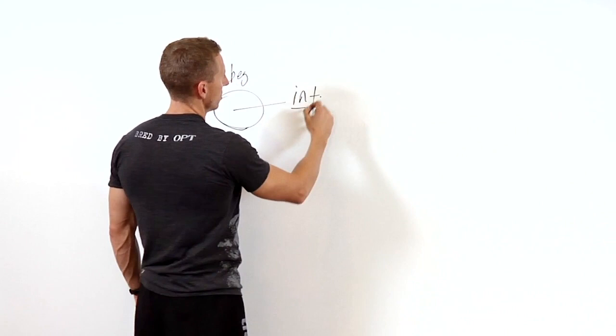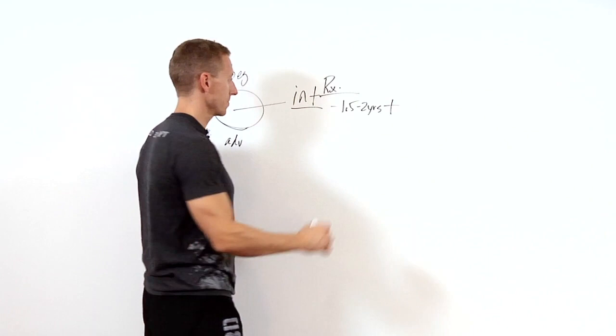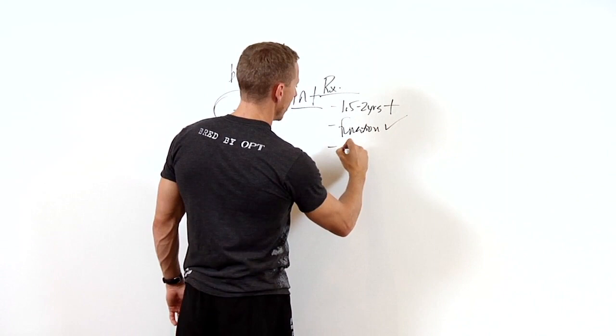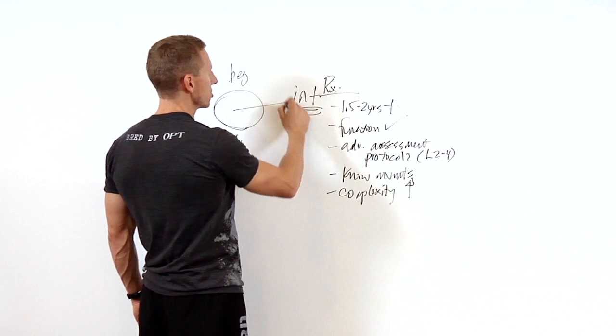So for the intermediate prescription, in comparison to the beginner, we're going to say things like 1.5 to 2 years plus in experience. Function is there. We're looking at advanced assessment protocols. They know movements now, so the complexity is increasing. These are some of the characteristics that we're starting with.